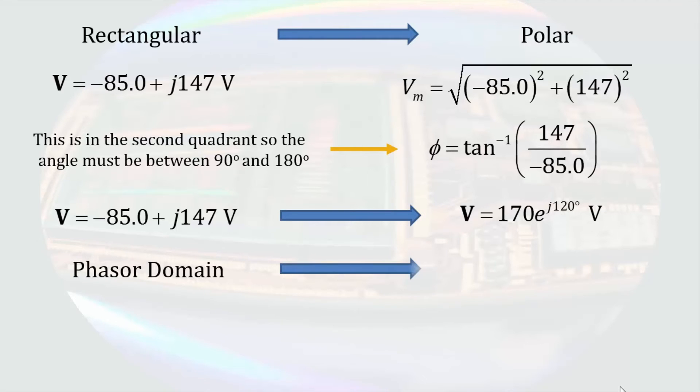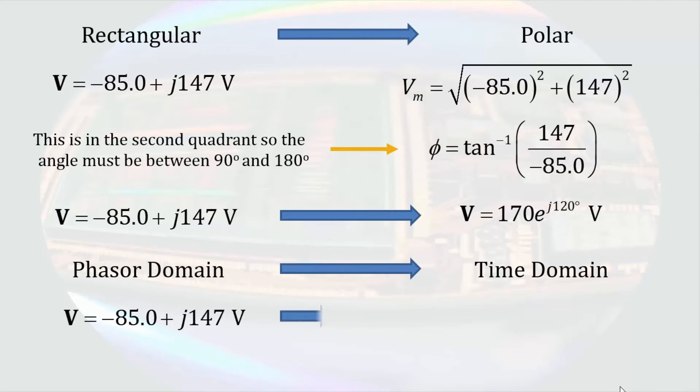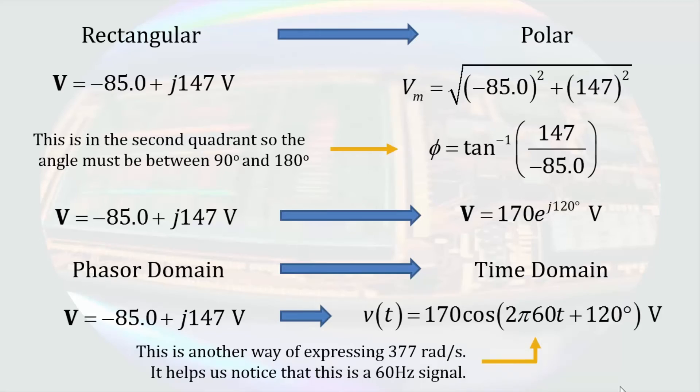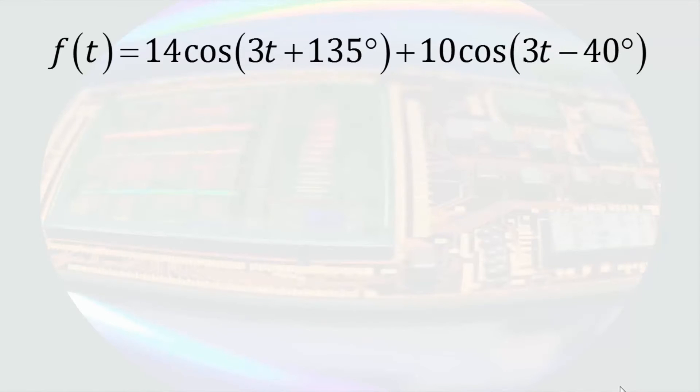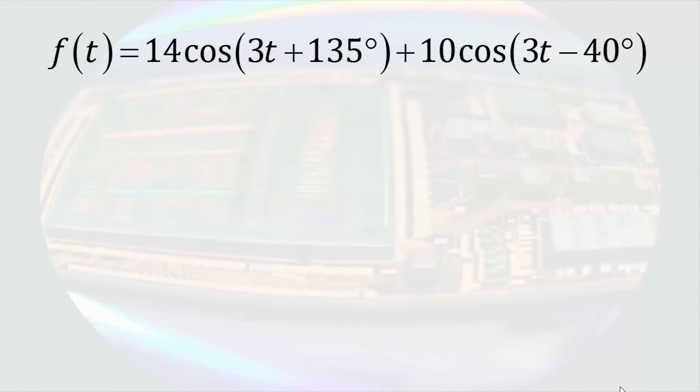To go from the phasor domain back to the time domain, we put the magnitude and phase angle into the cosine function and remember the angular frequency of the original function. Now that we know how to convert functions between time and phasor domains, we see that phasor techniques can be used to add two cosine functions. We could try to add them using trigonometric identities, but that sounds rather painful. Phasor analysis allows us to add these functions together in a straightforward way — at first, because of the many steps, it does not look much easier, but with practice the steps become second nature.